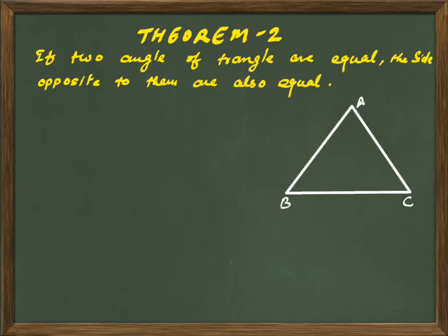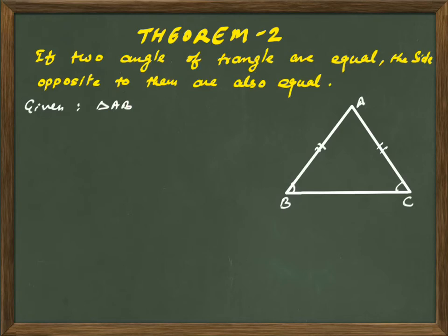Now we will talk about Theorem 2: if the two angles of a triangle are equal, the sides opposite to them are also equal. The side opposite to angle C is AB, and the side opposite to angle B is AC. Given: in triangle ABC, angle B equals angle C. We have to prove that AB equals AC.